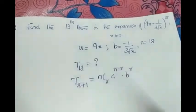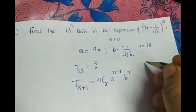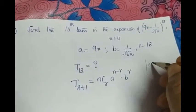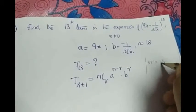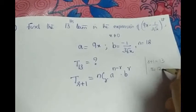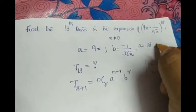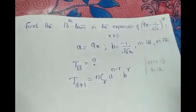We require the 13th term and the general formula is T_{r+1}. So what we will do? r+1. Take r+1 as 13 giving you the value of r as 12. So we will be substituting the value of r as 12.